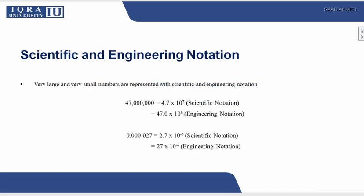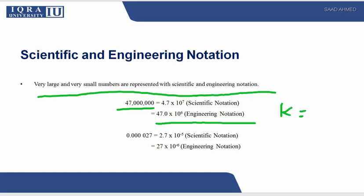Some scientific notations, these are very simple. Very large and very small numbers are represented with scientific and engineering notations. For example, if you want to write 47 mega ohms, k is 10 raised to power 3, mega is 10 raised to power 6.